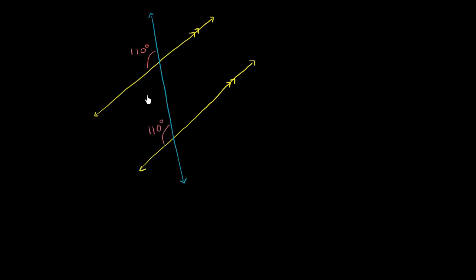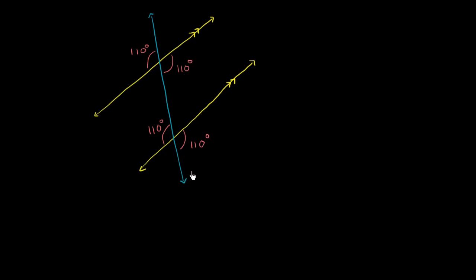Now we also know that vertical angles are equivalent. So if this is 110 degrees, then this angle right over here on the opposite side of the intersection is also going to be 110 degrees. And we could use that same logic to say that if this is 110 degrees, then this is also 110 degrees. We could have also said that this angle right over here corresponds to this angle right over here, so they also will have to be the same.